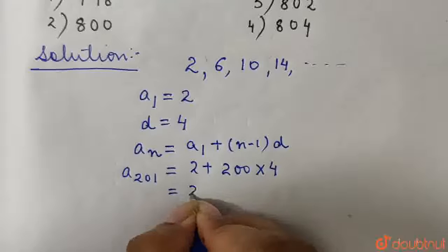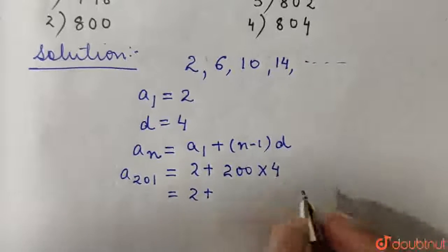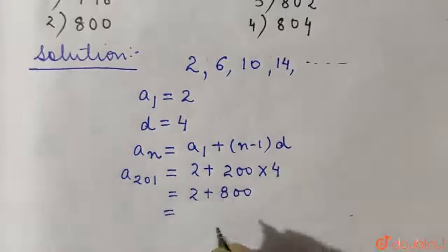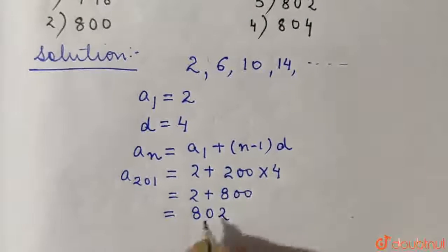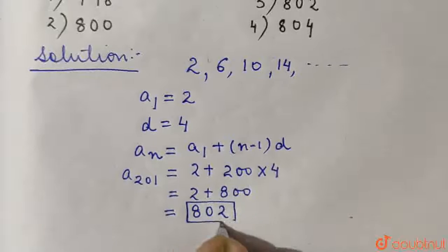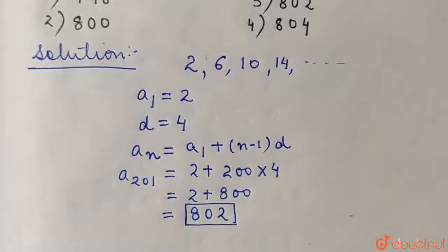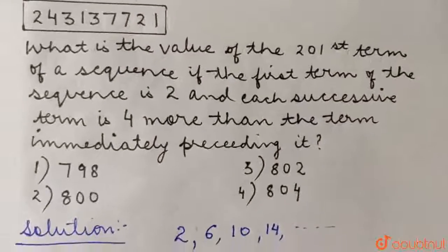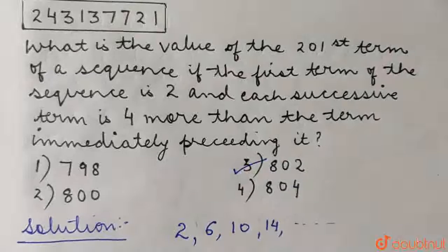So from here we have 2 plus 200 into 4 which gives us 800. And finally we have 802 as the final answer. So that means the 201st term of this particular sequence is 802. So from the options, option 3 is the correct answer.